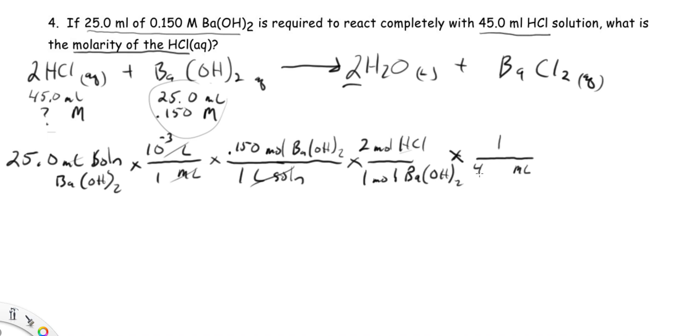So this is 45.0. Now I need to convert from milliliters. So I'm going to get rid of the 10 to the minus 3. That's fairly convenient. I'm getting rid of milliliters. And what's left is moles HCl over liter solution. I didn't cancel out those liters.